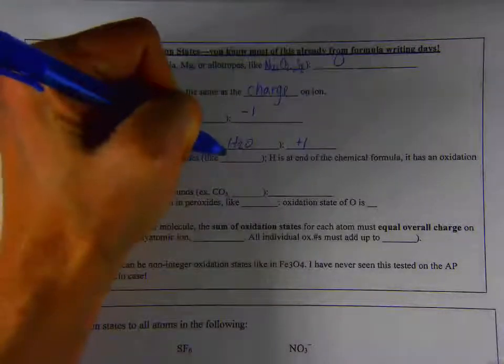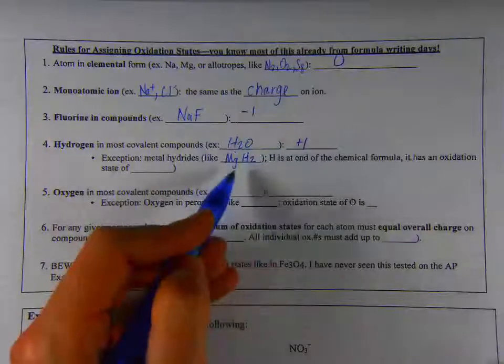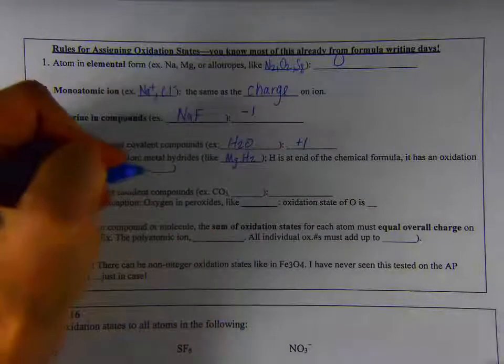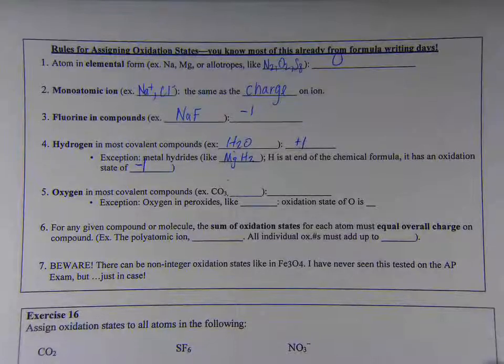The exception to that is metal hydrides, like magnesium hydride, MgH2. H is at the end. Magnesium would have the positive oxidation state. Hydrogen has the negative one oxidation state. These are rare examples. I don't expect you to see them too much.